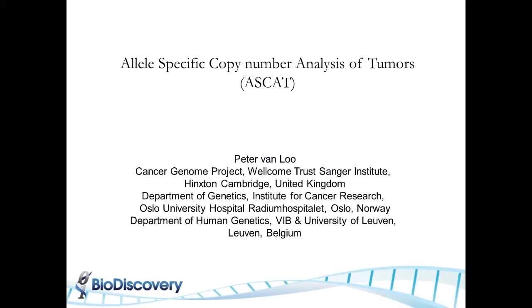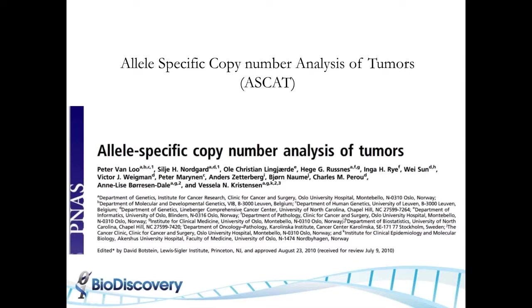This section is on allele-specific copy number analysis of tumors, known as ASCAT. The algorithm was developed by Peter Van Loo, who at the time was with Oslo and currently at the Sanger Center. The algorithm was published in PNAS in late 2010, and the idea of ASCAT was essentially to automate discovery of ploidy and percent normal contamination in tumor samples to get allele-specific copy numbers.